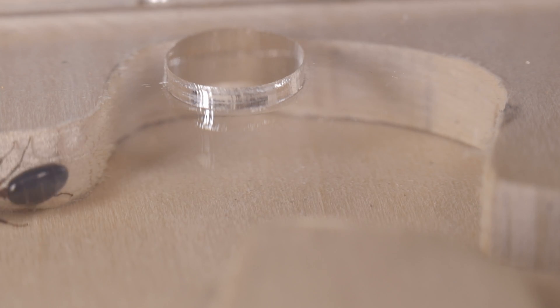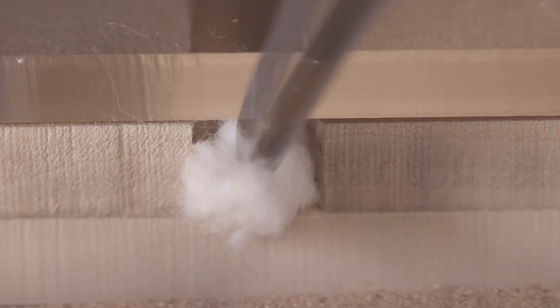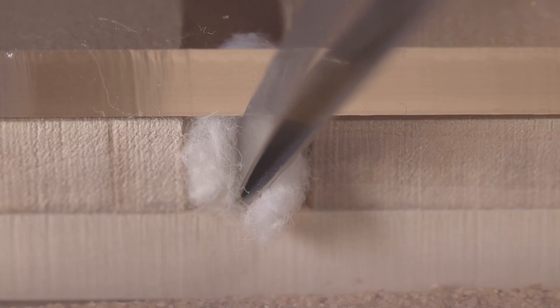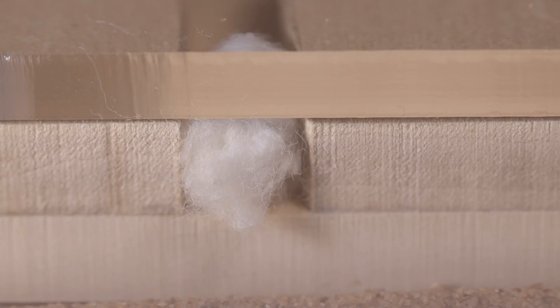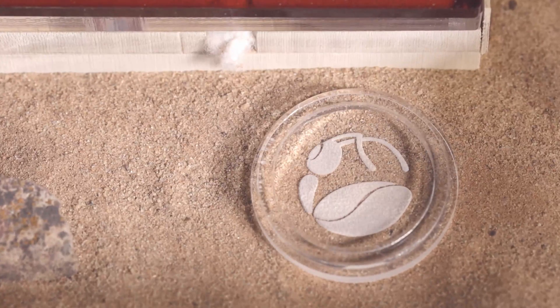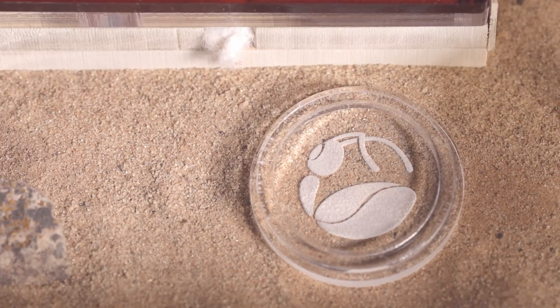Since this species is fully claustral, I'm going to plug the entrance with some cotton to ensure that the queen stays in the nest. If you are caring for a semi-claustral species, such as Pseudomyrmex, you can provide food in the outworld, preferably near the entrance so it's easy for her to find it.